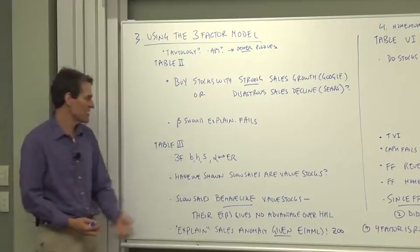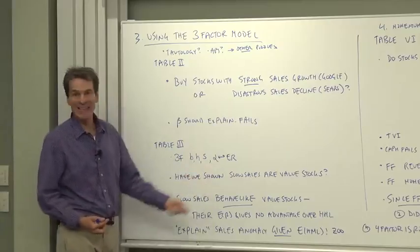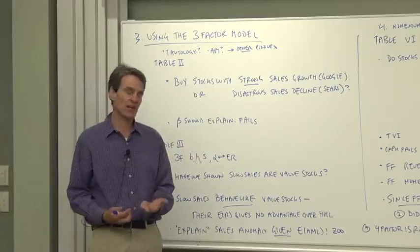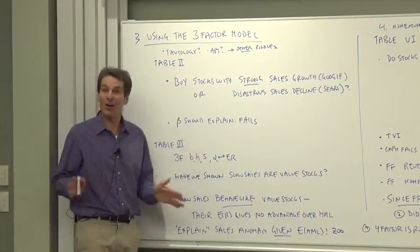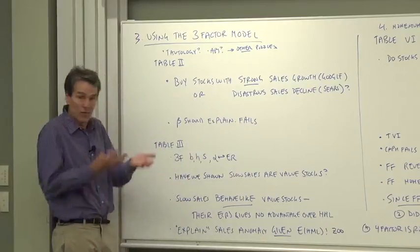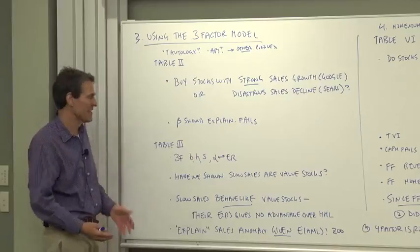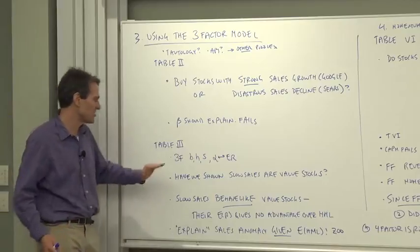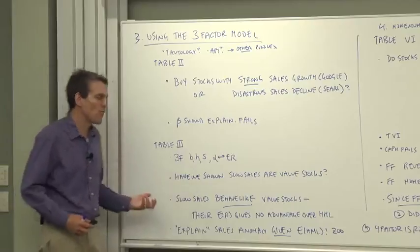What we've shown is that the slow sales stocks behave like value stocks. When the value stock returns go down, all these bad sales companies, their stocks go down as well. They probably are value stocks. A good way to have a low price is to have your sales decline, but the evidence in the table is just that they behave like value stocks.